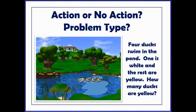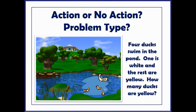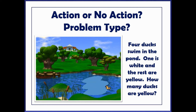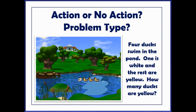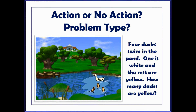Here's another one: four ducks swim in the pond, one is white and the rest are yellow — how many ducks are yellow? Again, the entire set is there. There's no action of adding to or taking away from, so this is not an action problem. We know that one of the ducks is white, so we know one part. We don't know the other part — the part that is yellow. So one of the add-ends is unknown.